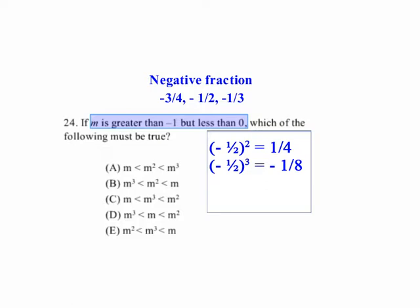Negative 1 eighth is greater because it's less negative. Remember that on the negative side, the number that's less negative is actually greater. And 1 fourth is a positive value. So the correct answer here is C.